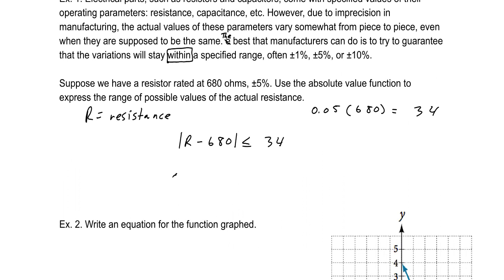Now I would like to draw this on a number line just to make a point. If I have my resistance and I have 680, let's put 680 there. Our resistance is going to be within 34 units, meaning plus or minus 34. Somewhere in this range is where our resistance is going to lie. That is a visual representation of what that inequality actually states—all the values within 34 ohms of our targeted 680 ohms.